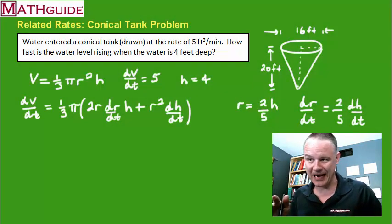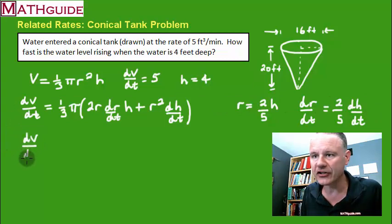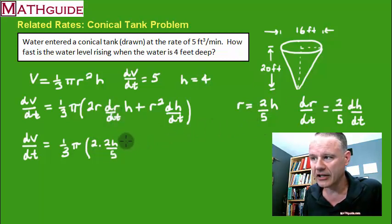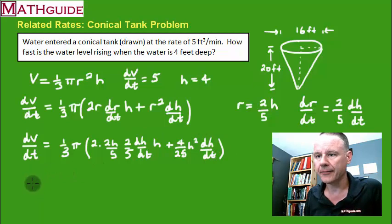As you can see here, things can get pretty complicated because I have a very complicated formula. I got some substitutions to put in, so let's put in one layer of substitution. What I mean by that is I'm going to plug in a few things and then we're going to follow this numerically. So let's do two times r - I'm going to put two times r is two h over five, I'm going to put dr/dt which is two fifths dh/dt, times h. Then I'm going to take the radius squared, so I'm going to square this - that would be four twenty-fifths h squared times dh/dt.